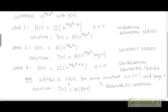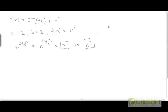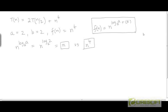Now we could check for the regularity condition here, but we can say even without it that it will hold. Because we proved that if f has specifically the form n to the power log of a base b plus some epsilon, then the common ratio for the summation of the level sums down the recursion tree will be less than 1, giving us a decreasing geometric series. So we don't have to check for the regularity condition in this case. We can directly write T(n) = Θ(f) = Θ(n^4) by Case 3 of the Master Theorem.